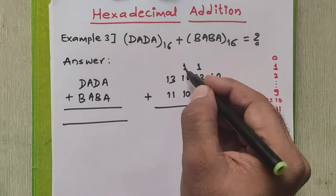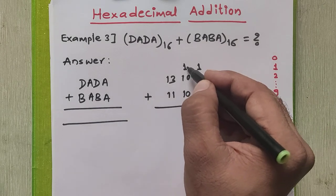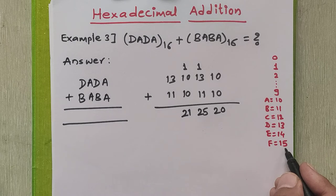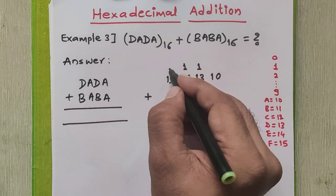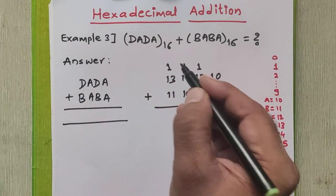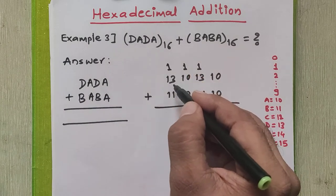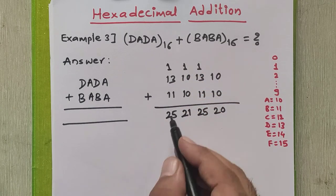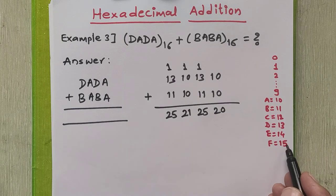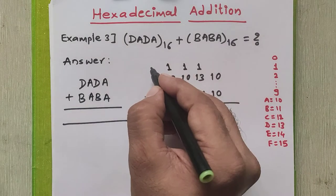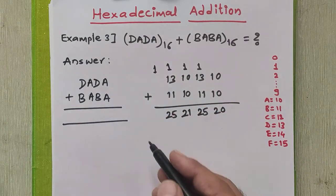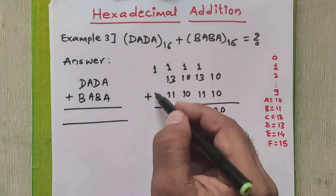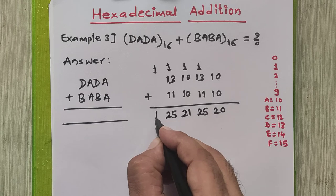We add the next column: 10 plus 10 plus the carry of 1 is 21. Again, 21 is greater than 15, so we need to generate a carry. Adding 1, 13, and 11 gives 25 again. Since 25 is greater than 15, we generate a carry to the next step. In the final step, there are no further digits for addition, so the carry of 1 is written as it is in the final answer.